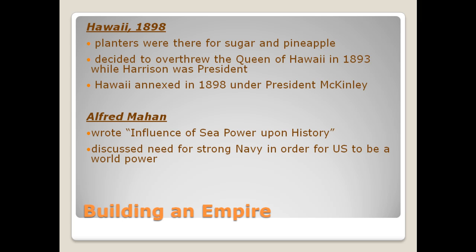In Hawaii, we overthrew Queen Liliuokalani in the late 1800s, and in 1898 President McKinley agreed to annex Hawaii. Hawaii was actually overthrown while Harrison was president — he appealed to Congress to annex Hawaii but was turned down. Cleveland came along right after him and actually apologized to the Hawaiians, saying that what we did was reprehensible.